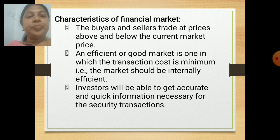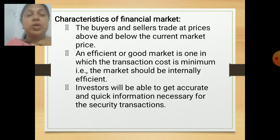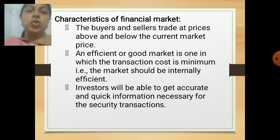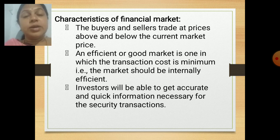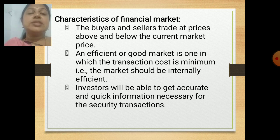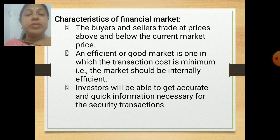Let us see some characteristics of the financial market. The buyers and sellers trade at prices above and below the current market price. They can trade in this market based on the rate prevailing on that particular day. An efficient or good market is one in which the transaction cost is minimum — that is, the market should be internally efficient and the transaction cost should be very less.